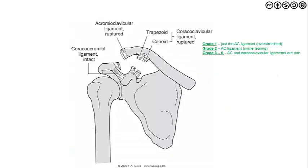To summarize the ligament injuries: we have the acromioclavicular ligament and the coracoacromial ligament, while the coracoclavicular ligament — including the trapezoid and conoid portions — is also involved. Grade one is a slight overstretch; grade two involves AC ligament tearing; and grade three involves tearing of both the AC and CC ligaments.